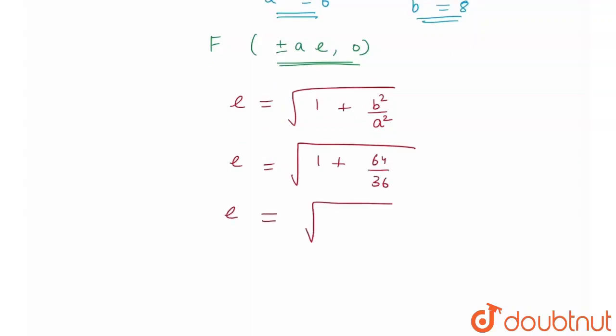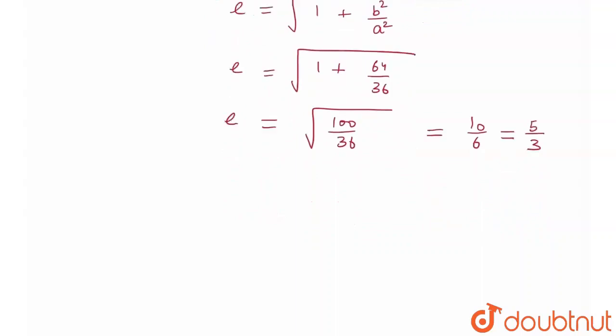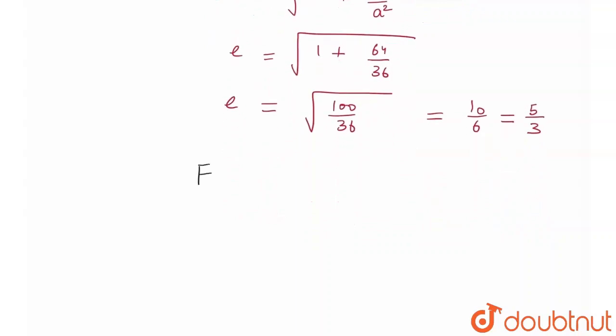Therefore, e would be equal to under root of 100 upon 36, which would be equal to 10 upon 6, or I can say this would be equal to 5 by 3. So here I have the eccentricity. Therefore, I can write the coordinates of foci that would be equal to ae comma 0. So plus minus a that is 6 multiply by e that is equal to 5 by 3 comma 0, or I can say the coordinates of foci are plus minus 10 comma 0.